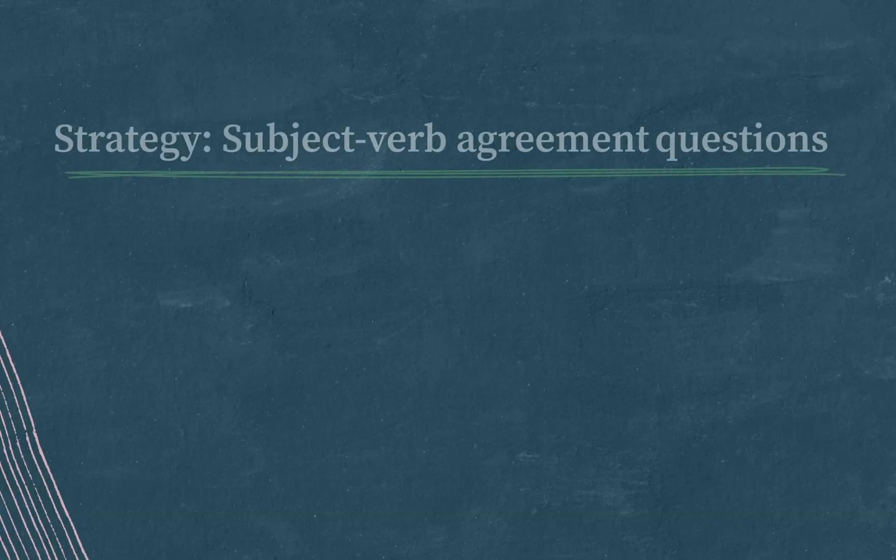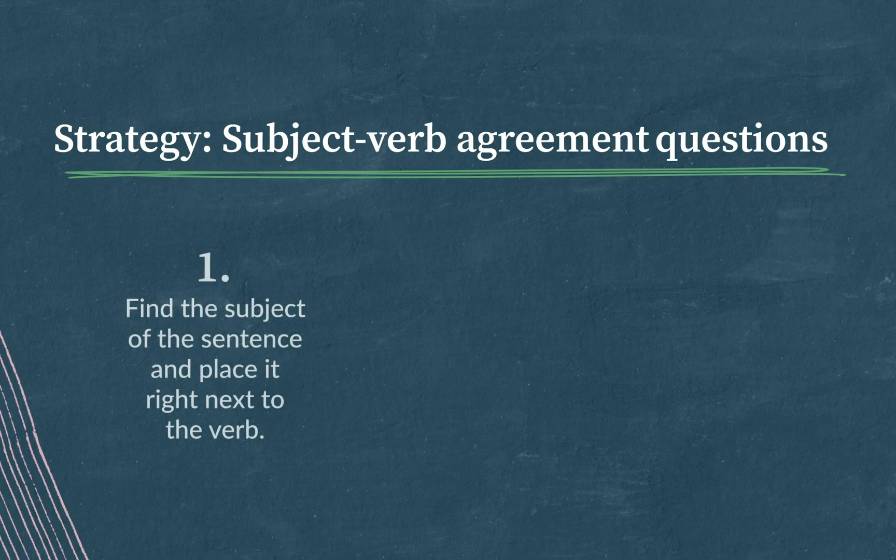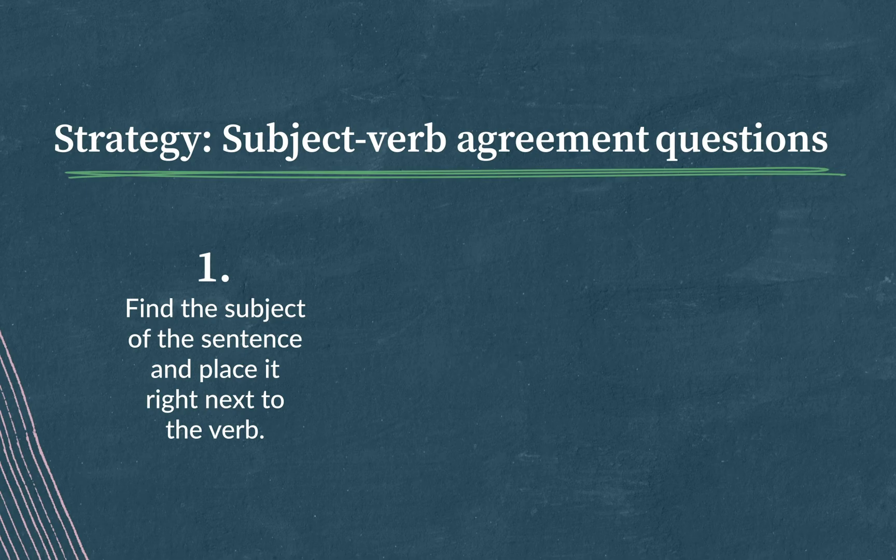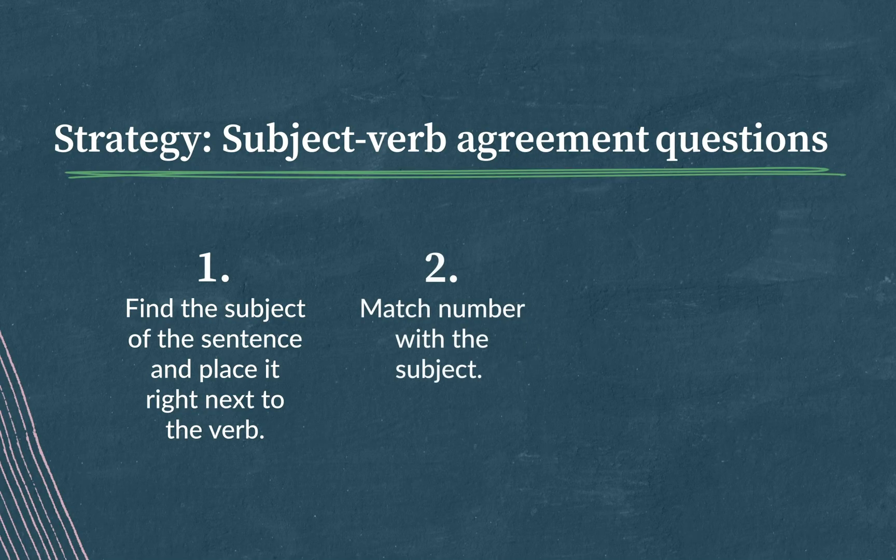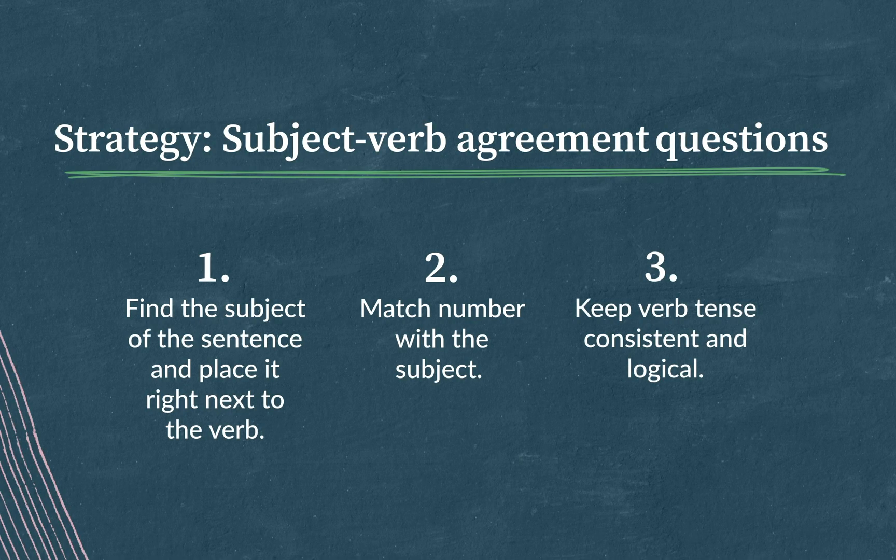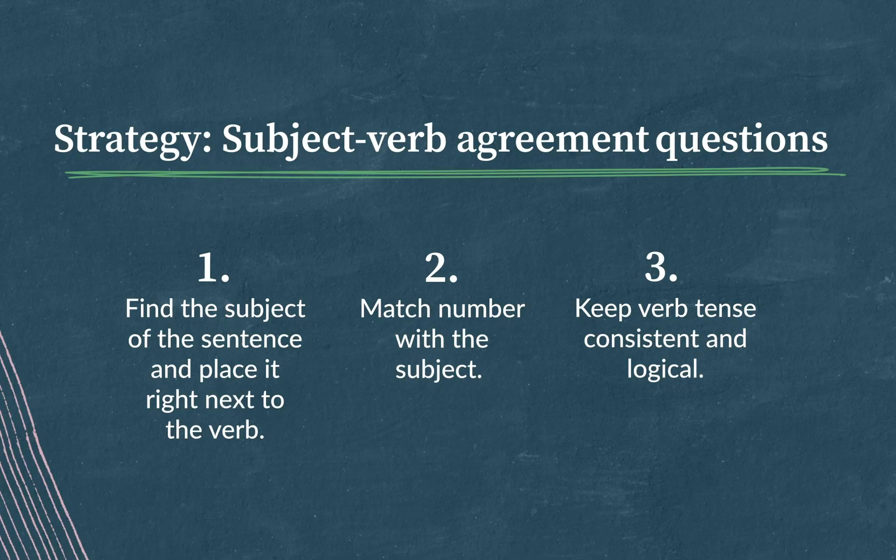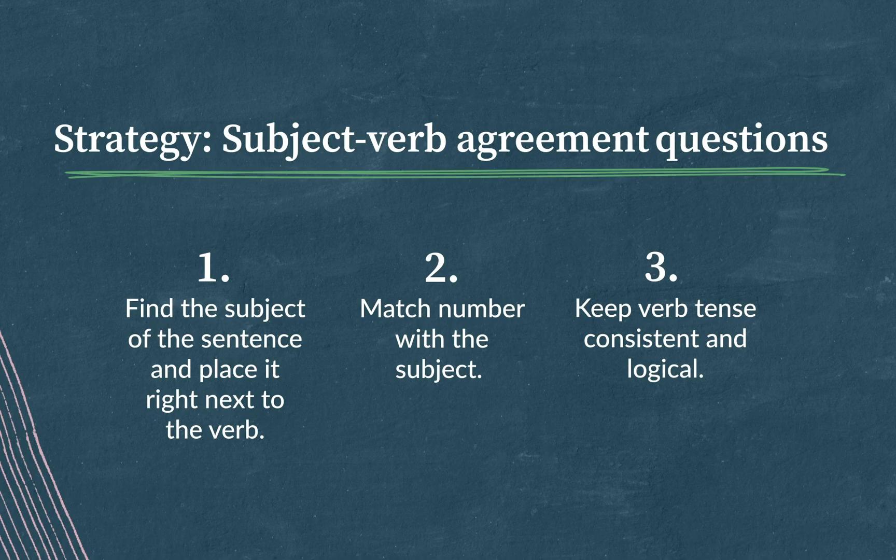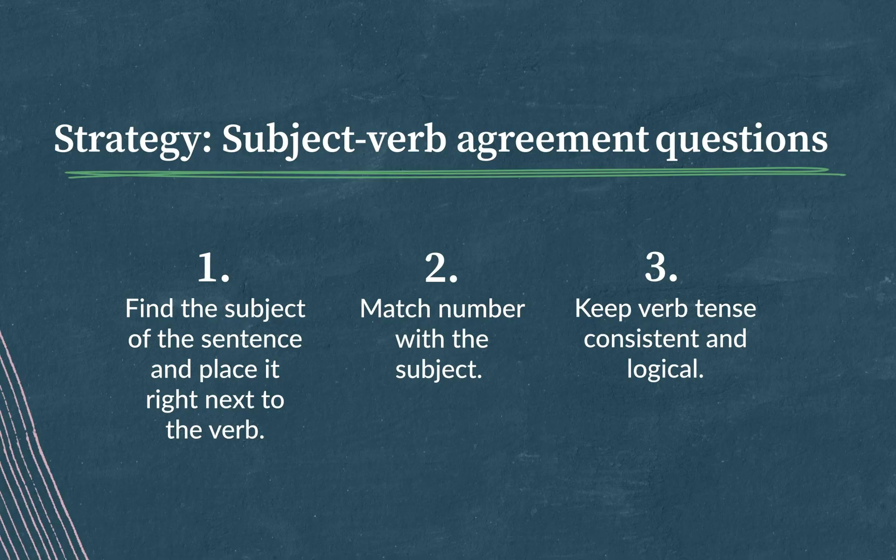Let's review our strategy. First, find the subject of the sentence and place it right next to the verb. What's the word that is performing the main action? That's our subject. Then match number. Does the subject agree in number with the verb? If the subject is singular, then it needs a singular form of the verb. If the subject is plural, then it needs a plural form of that verb. Finally, keep verb tense consistent and logical. For example, if the verbs in the paragraph are in the past tense, you'll need a good logical reason to use a verb in any other tense. It's usually better to keep them all in the same tense. Once you determine what the subject is, questions like these fall into place. Good luck out there. You've got this.